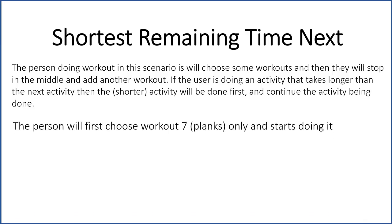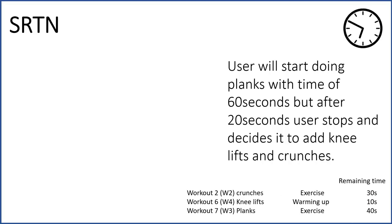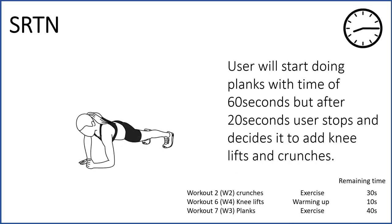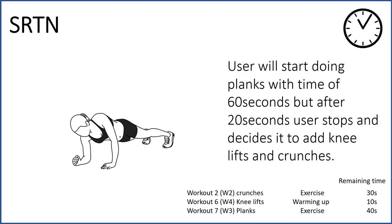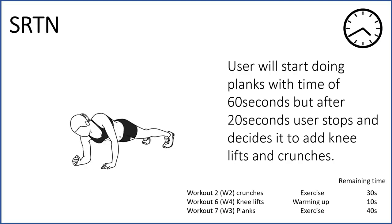The person will first choose workout seven, which is planks only, and then will start doing it. The user will start doing planks with a time of 60 seconds, but after 20 seconds the user stops and decides to add knee lifts and crunches.